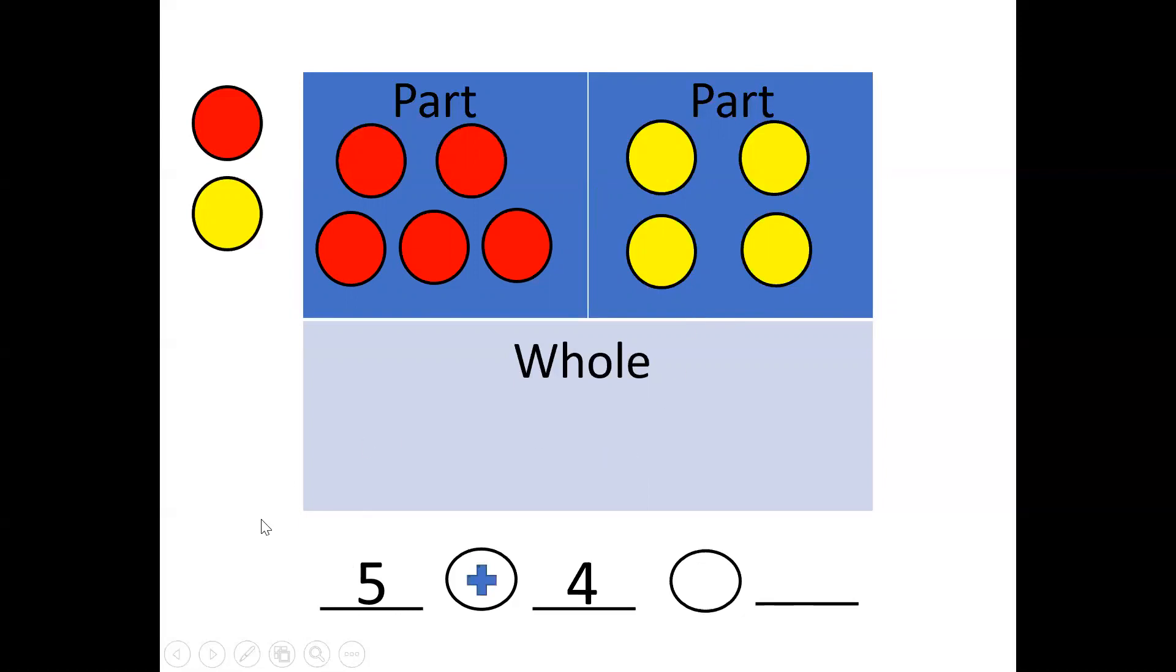So right now we have five and we put a five down here plus four yellows. Now we have to figure out the sum. Remember our job is going to be to pull both parts down into the whole box and count them again.